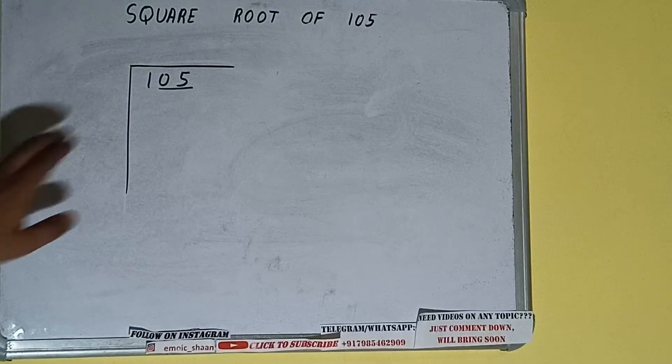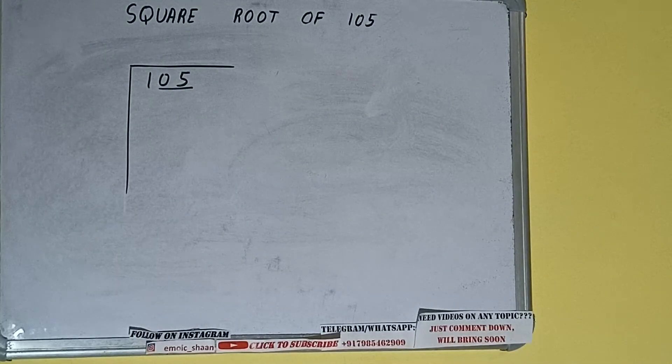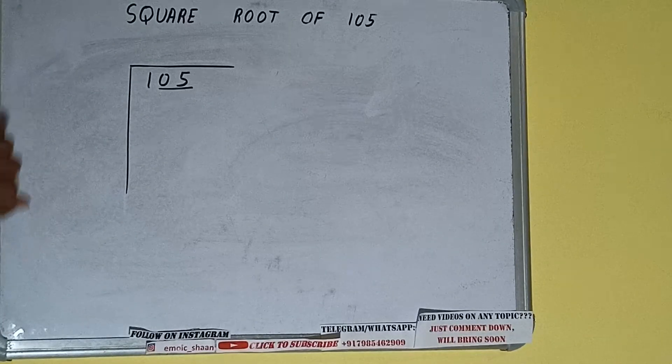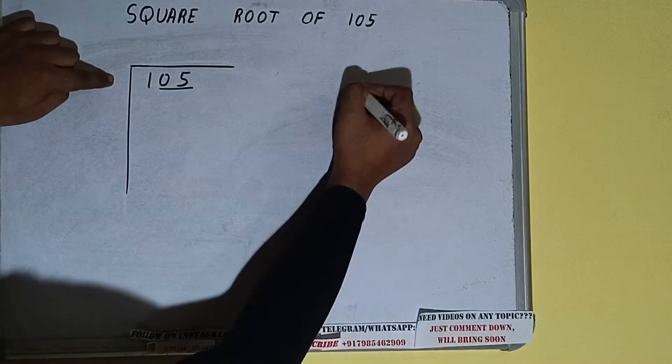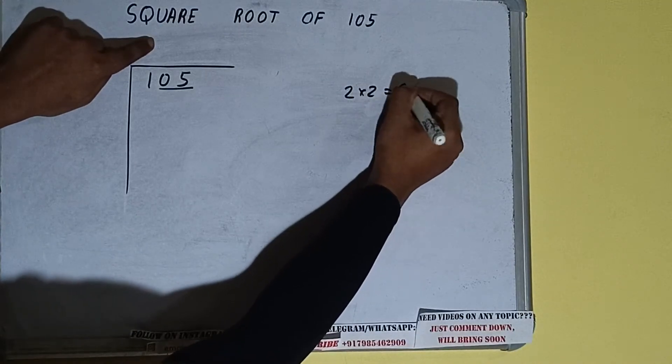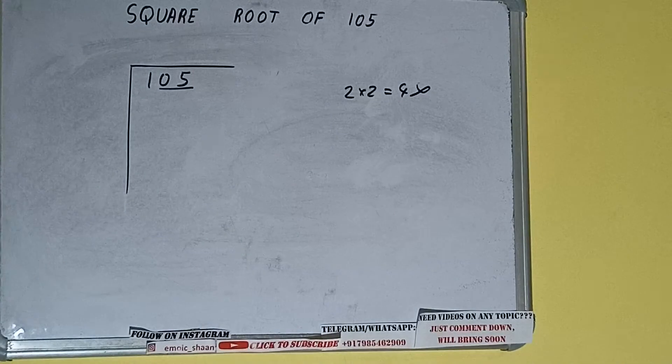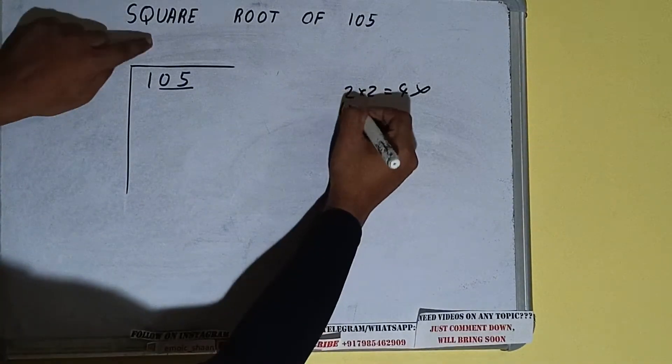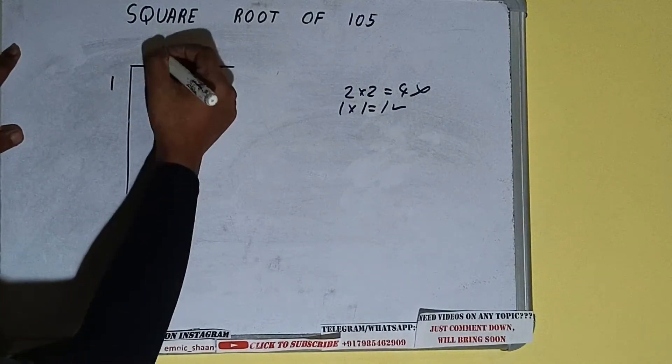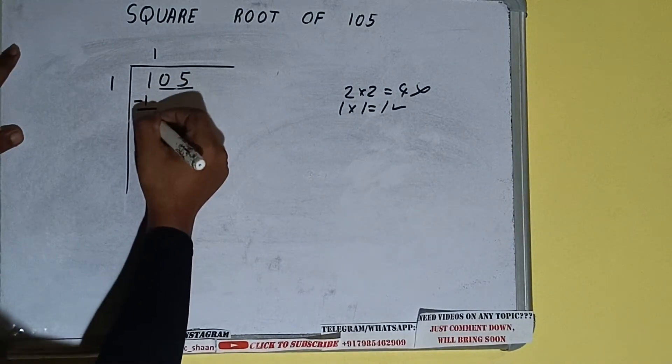So first we'll divide this one and then we'll bring down the pair. The rule is whatever number be right here we have to write here also. So if we write two here and two here it will be four which is greater than one so we cannot take it. If we write one here and one here it will be one which is good to take. So one here and one here, one subtract zero will be left.